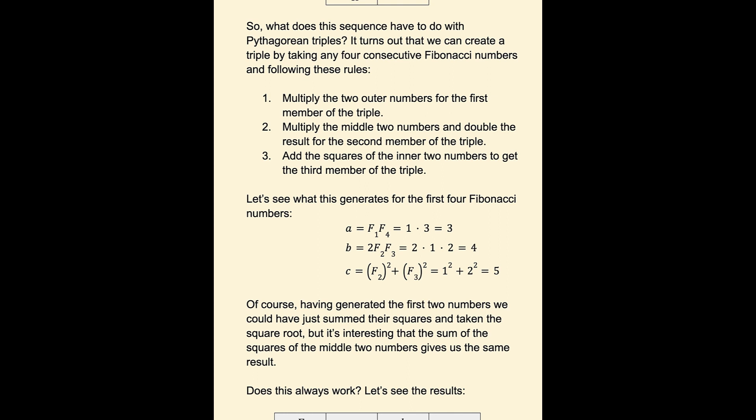For B, we get twice F2 times F3. So that's 2 times 1 times 2, which is 4. And for C, we get F2 squared plus F3 squared. So that's 1 squared plus 2 squared, which is 5.